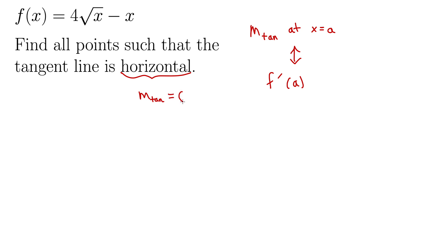So this tells us we're looking for the places where m tan equals 0. That is, we're looking for places where the derivative is 0. So let's take the derivative of this, set it equal to 0, and solve for x.